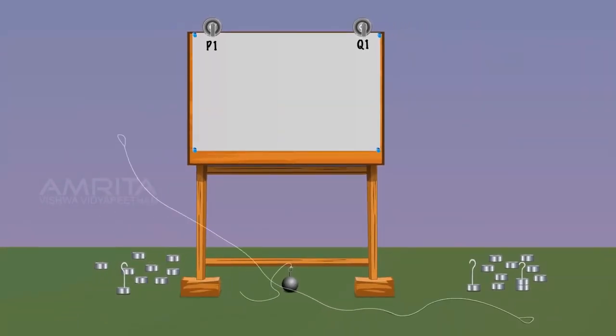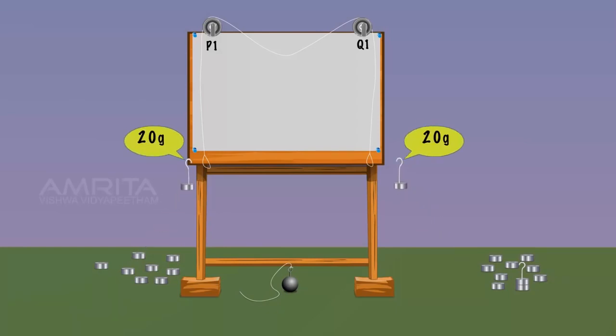Take a thread and pass it over the pulleys and hang equal weights, say 20g to both ends. Mark it as P and Q.